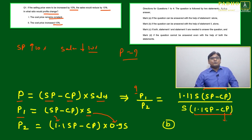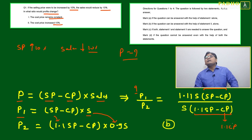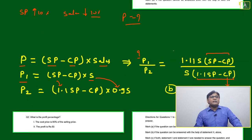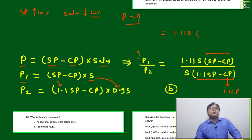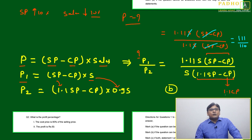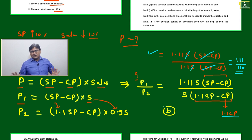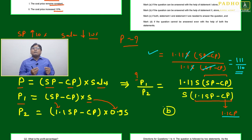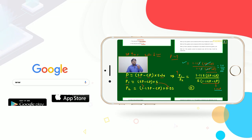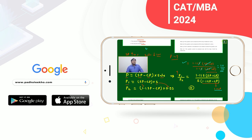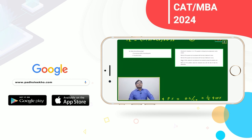For Statement 2, cost price increases by 10 percent, so CP becomes 1.1·CP. Then P2 = (1.1·SP − 1.1·CP) × 0.9S = 1.1(SP − CP) × 0.9S. The factor 1.1 becomes common and can be factored out, allowing us to compute the ratio. Since a unique solution is obtainable, Statement 2 alone is sufficient. Therefore, the answer is option B.